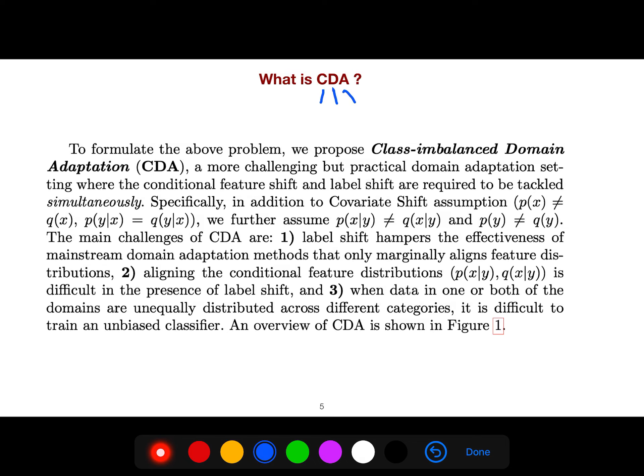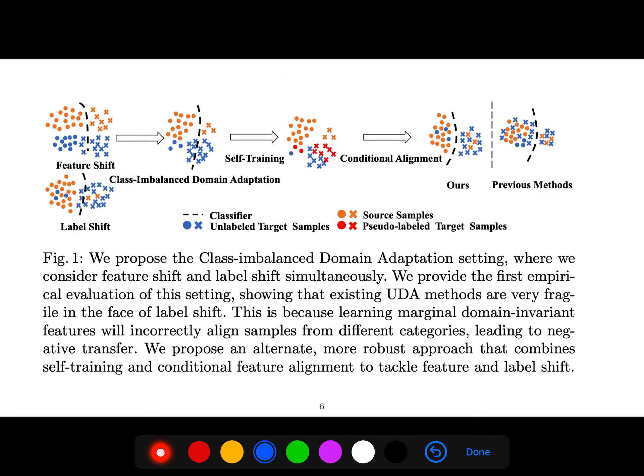But what does CDA stand for? It stands for class imbalance domain adaptation. They proposed in this paper that it's a more challenging but practical domain adaptation setting where the conditional feature shift and label shift are required to be tackled simultaneously.